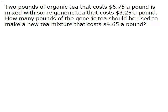In this video, I'm going to go over what a mixture problem is and how we can make sense of it. I'm going to start with this example: two pounds of organic tea that costs $6.75 a pound is mixed with some generic tea that costs $3.25 a pound.